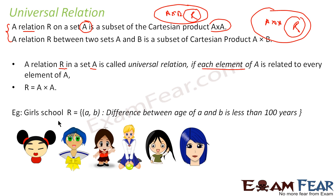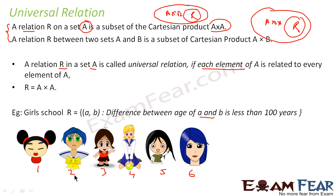For example, consider a set of girls and define the relation: the difference between the ages of girl A and girl B is less than 100 years. You take any two girls — girl 1, 2, 3, 4, 5, 6 — and the difference between their ages must be less than 100 years, because they are all class 10 school girls.